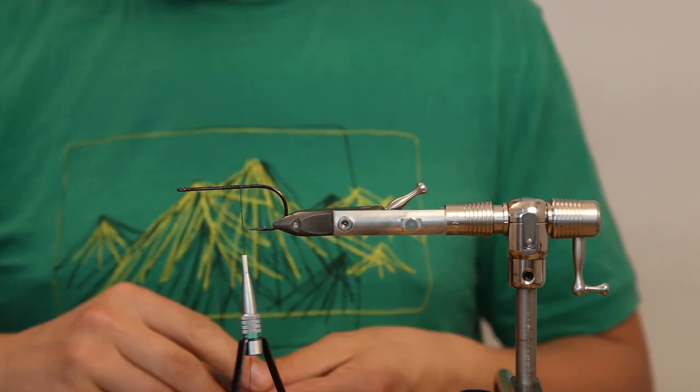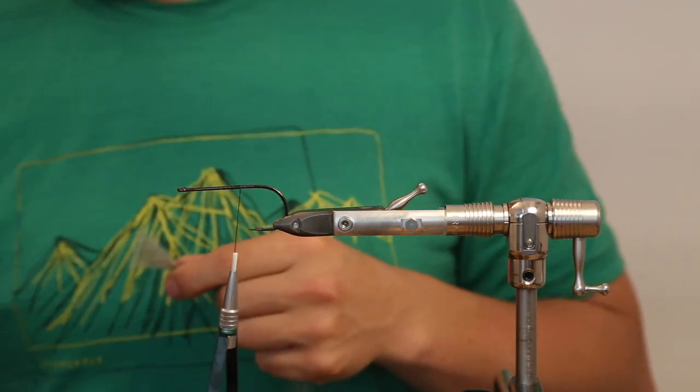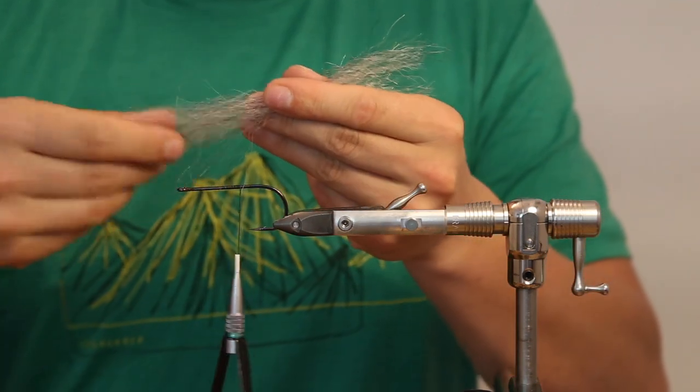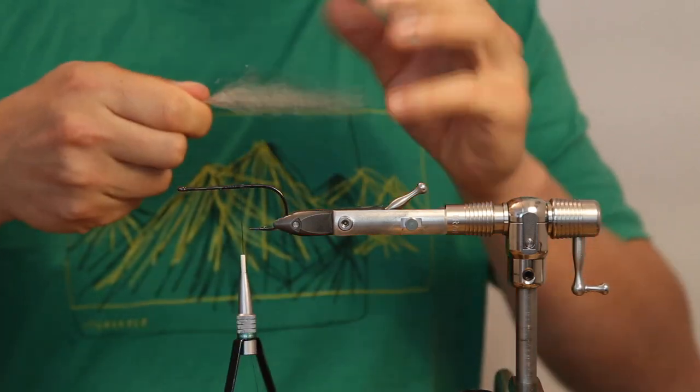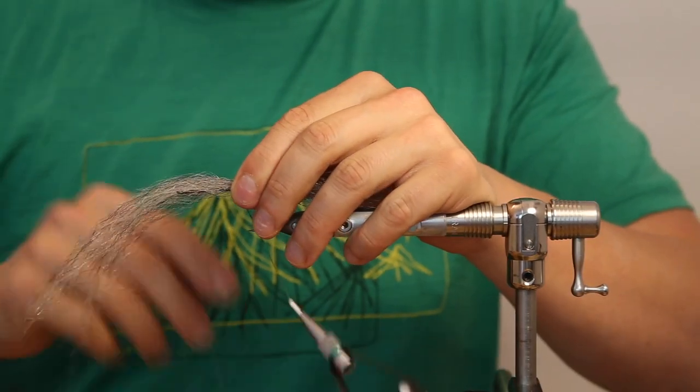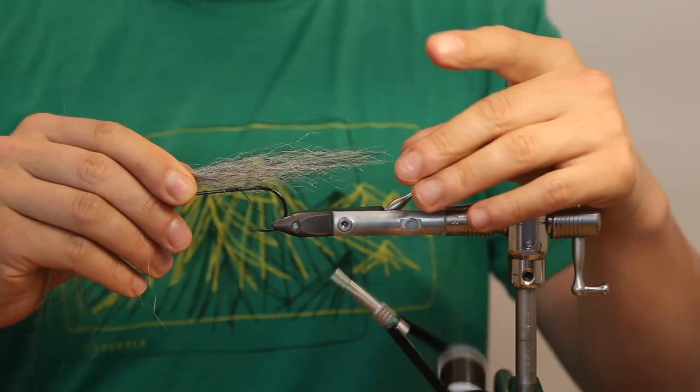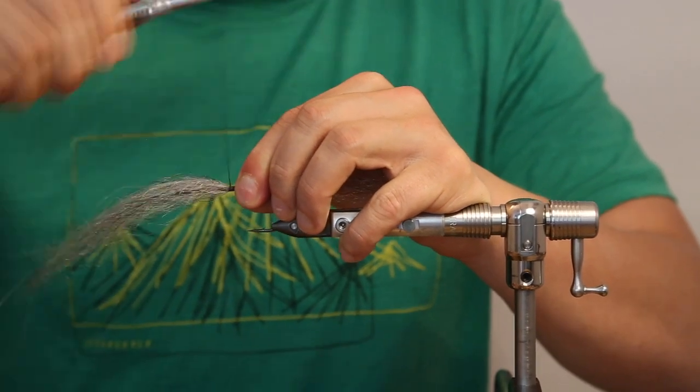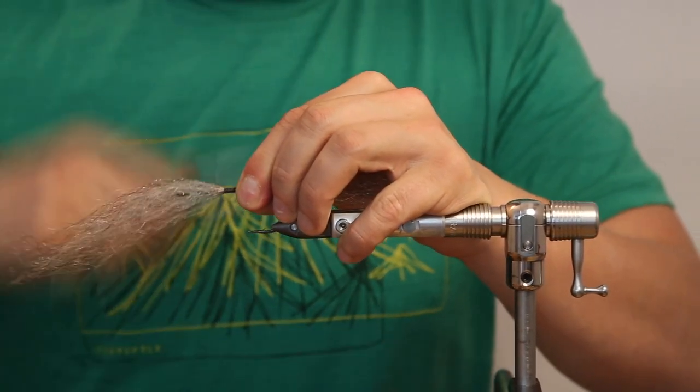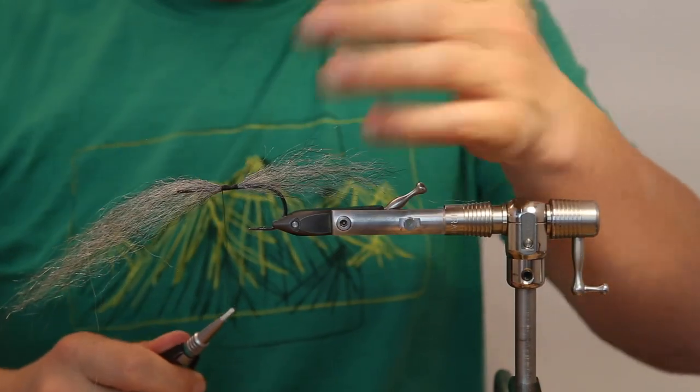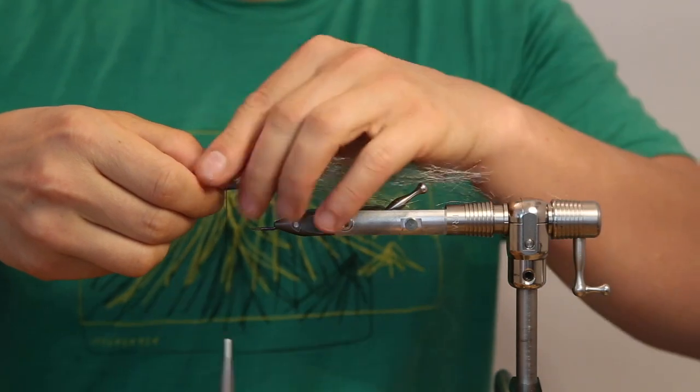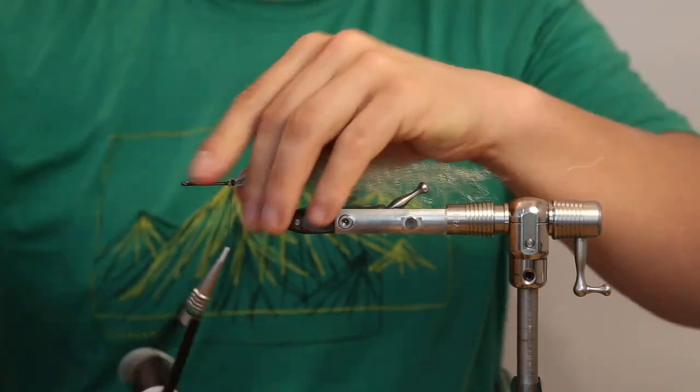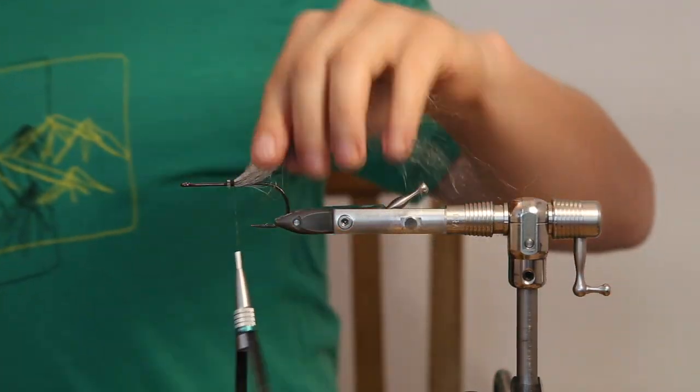So we start with the baitfish fiber. Just cut it in half, tape it a bit like that. Really easy and then just tie it in. So you leave a little bit over at the end. We're just supporting our main material and just go quite a decent way down the hook shank. Maybe centimeter, one and a half.